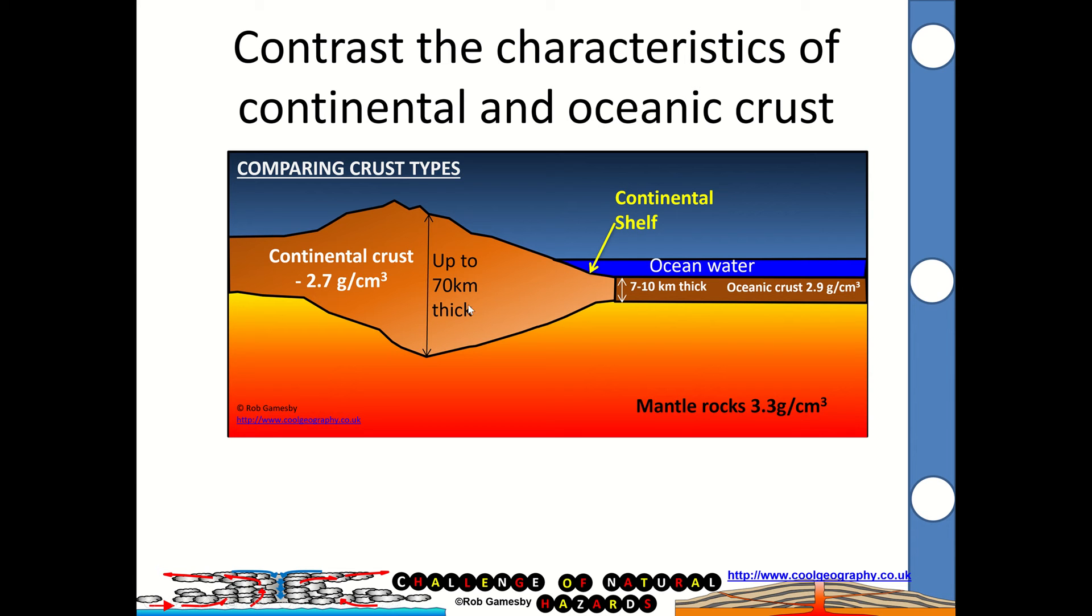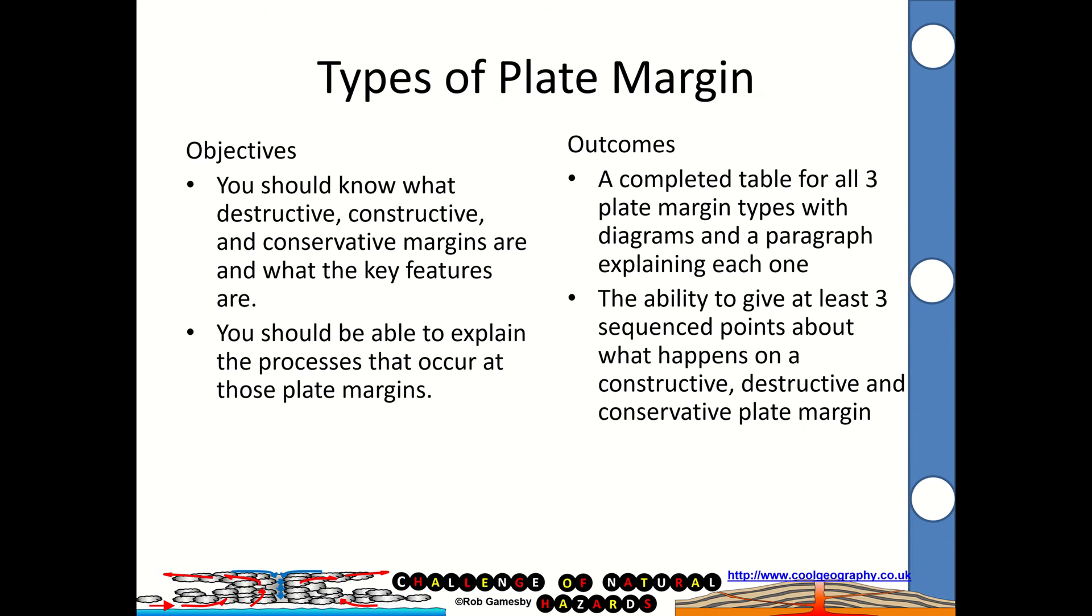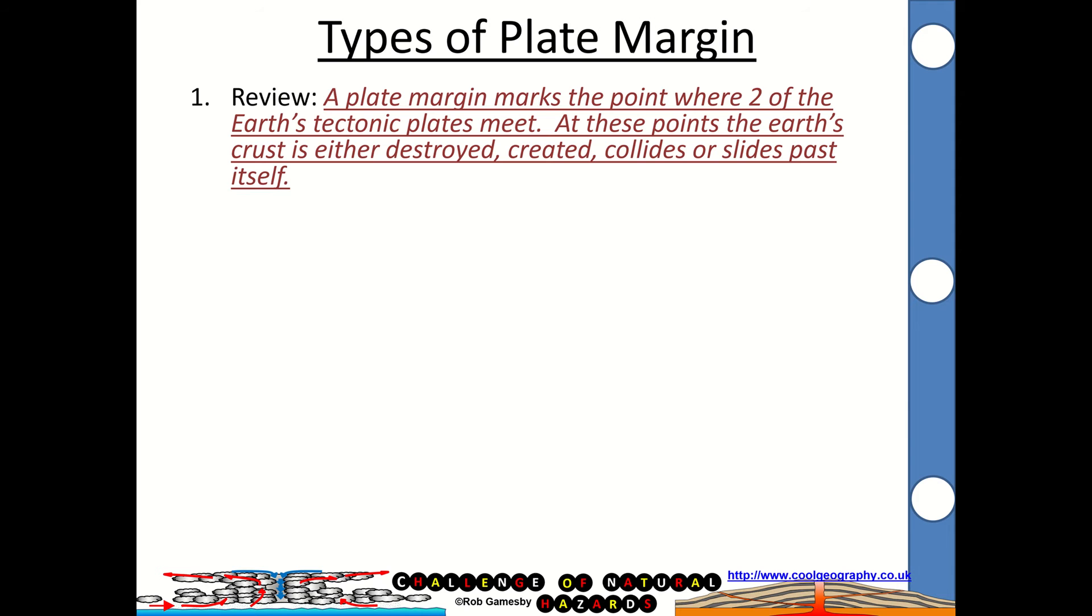Now, that's important when two different plate types mix and clash together, that will lead to different types of plate margin. That's why the oceanic crust gets pushed down and destroyed because it's denser or heavier. So we're going to look at types of plate margin. Just remember, a plate margin marks the point where two of the Earth's tectonic plates meet, and at those points, the Earth's crust is either destroyed, or we get creation of new crust, it collides to create mountains, or it slides past itself. I don't actually like the word slide, it more grinds past itself, because rocks are really tough, abrasive substance.